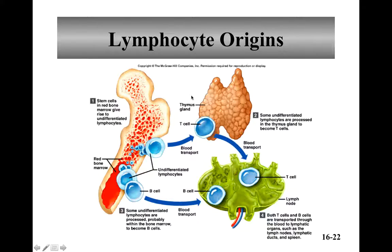This is part three on lymphatic origins. All those blood cells come from the red marrow and they're undifferentiated when first created. B cells are differentiated in the red marrow and then go into the bloodstream, ending up in the lymphatic system — like a lymph node — where they can do their job.